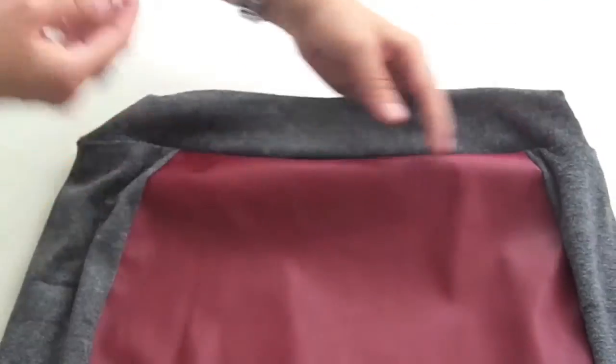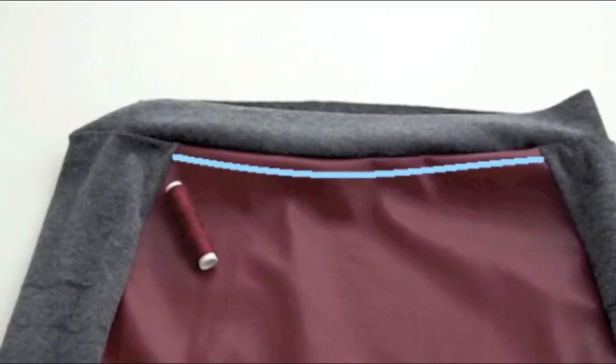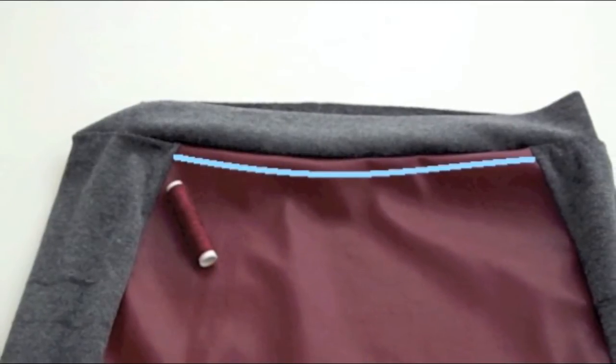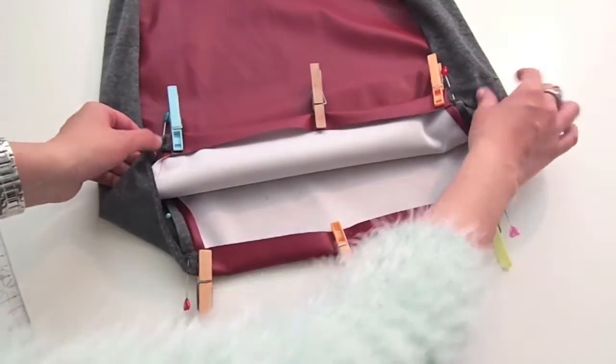Now you can actually skip this step, but I think it gives a nicer looking finish to the skirt, and it's just topstitching on the top, taking with it the seams at the back of the waistband.